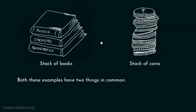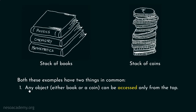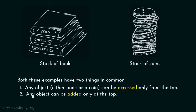In both these examples, there are two things which are common. First, any object — either a book or a coin — can be accessed only from the top. And the second thing is, any object can be added only at the top.